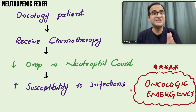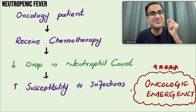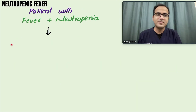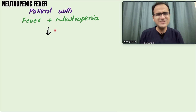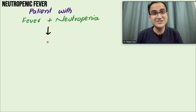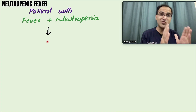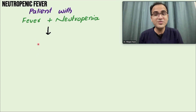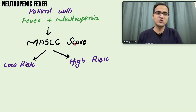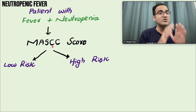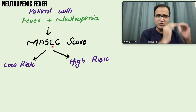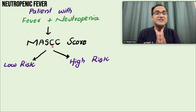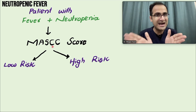Neutropenic fever is an oncologic emergency — every passing minute you are losing time, so you have to treat these patients immediately. Whenever a patient presents with fever and neutropenia, the first thing you have to do is classify the patient based on a scoring criteria called the MASCC score. Using the MASCC score, you classify the patient as low risk or high risk.